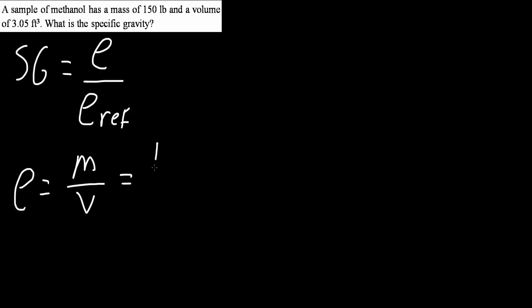So, if we do 150 pounds divided by 3.05 feet cubed, we would get approximately 49.2 pounds per feet cubed.